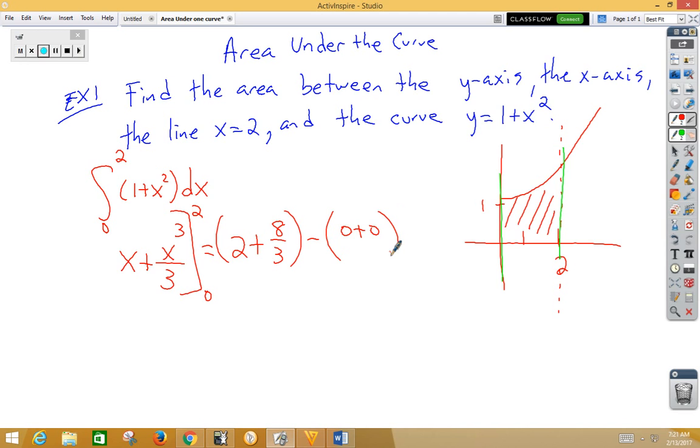So 2 plus 8 thirds, let's make a common denominator. We're going to have 6 thirds plus 8 thirds, which is 14 thirds, and that would be the area under the curve.